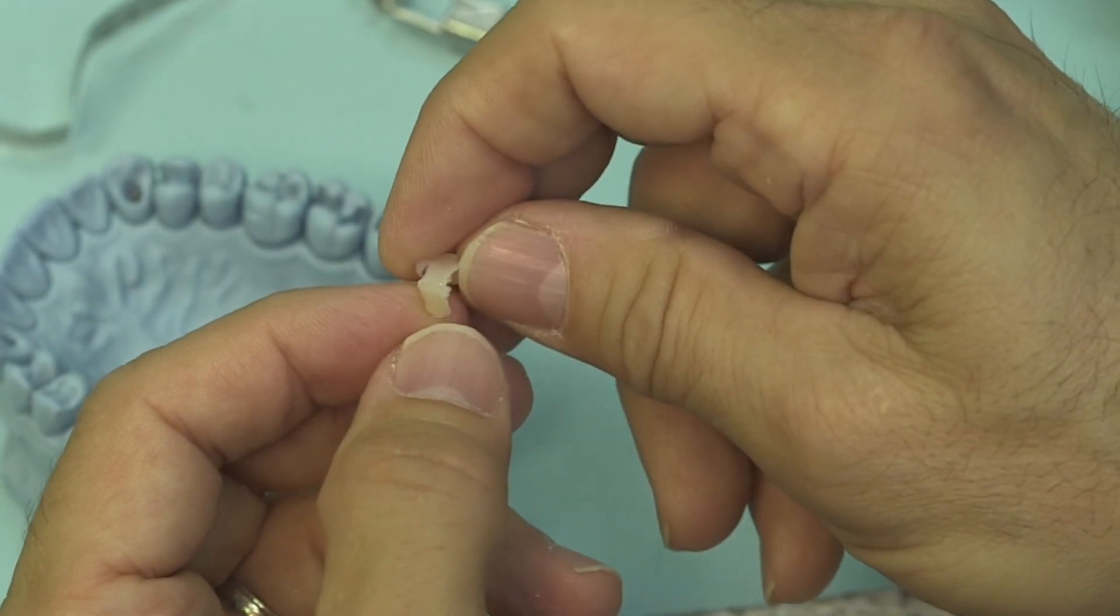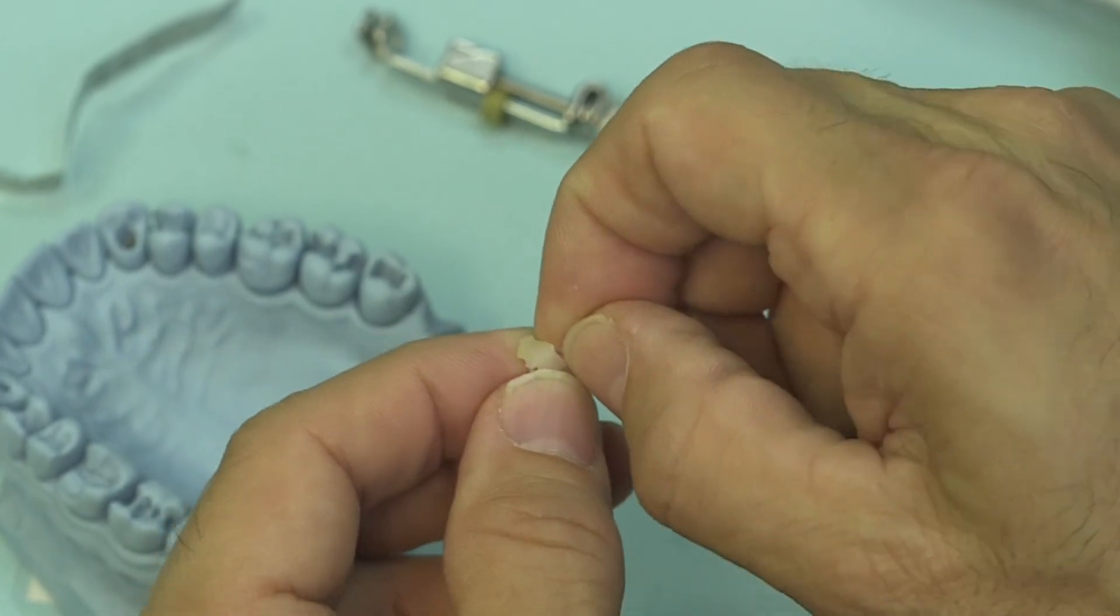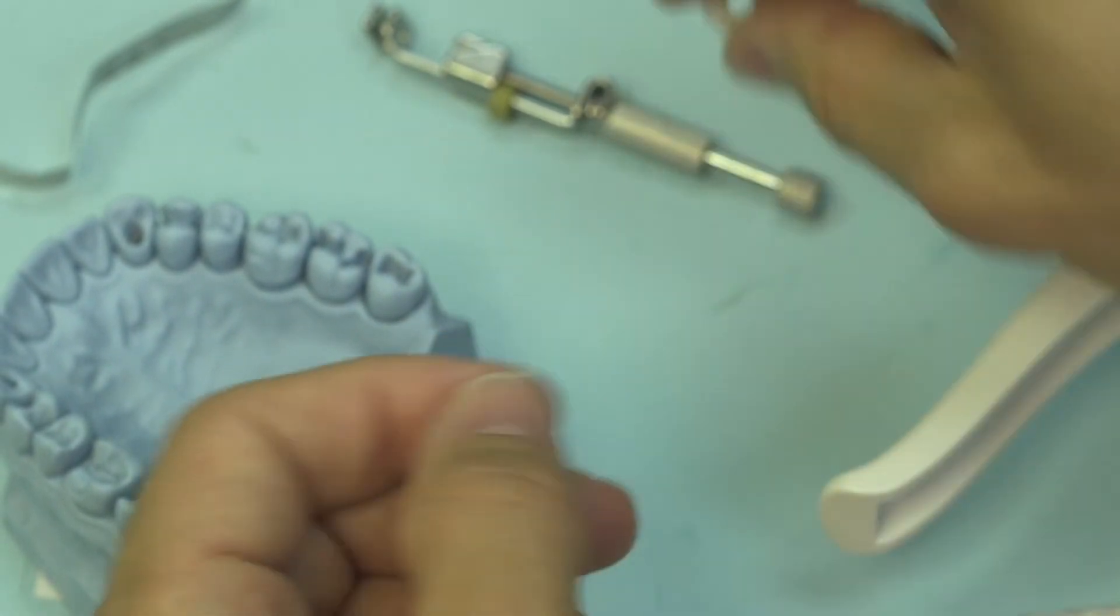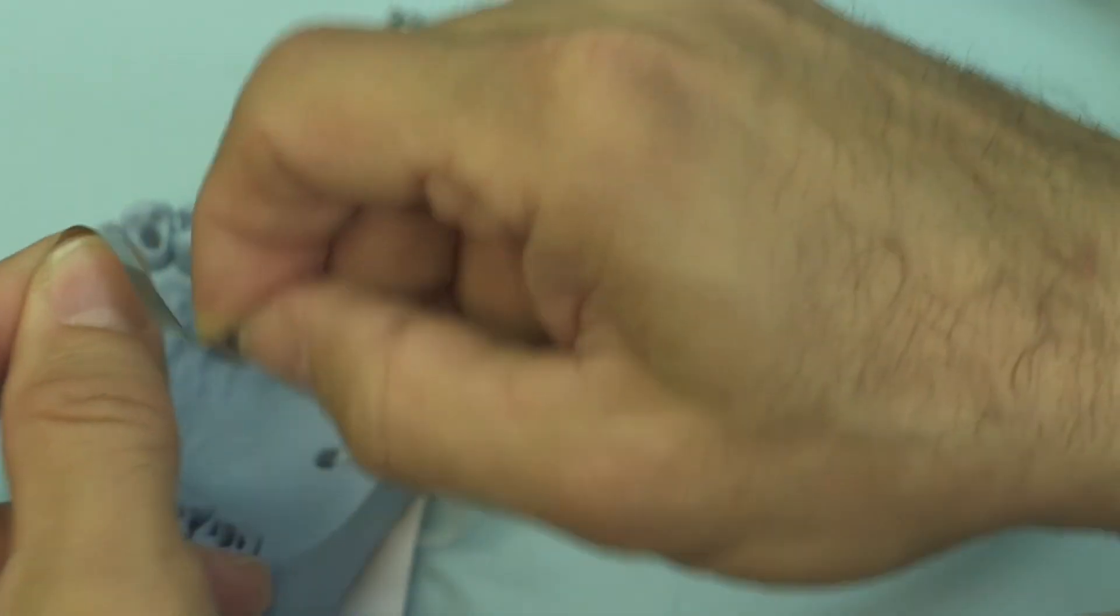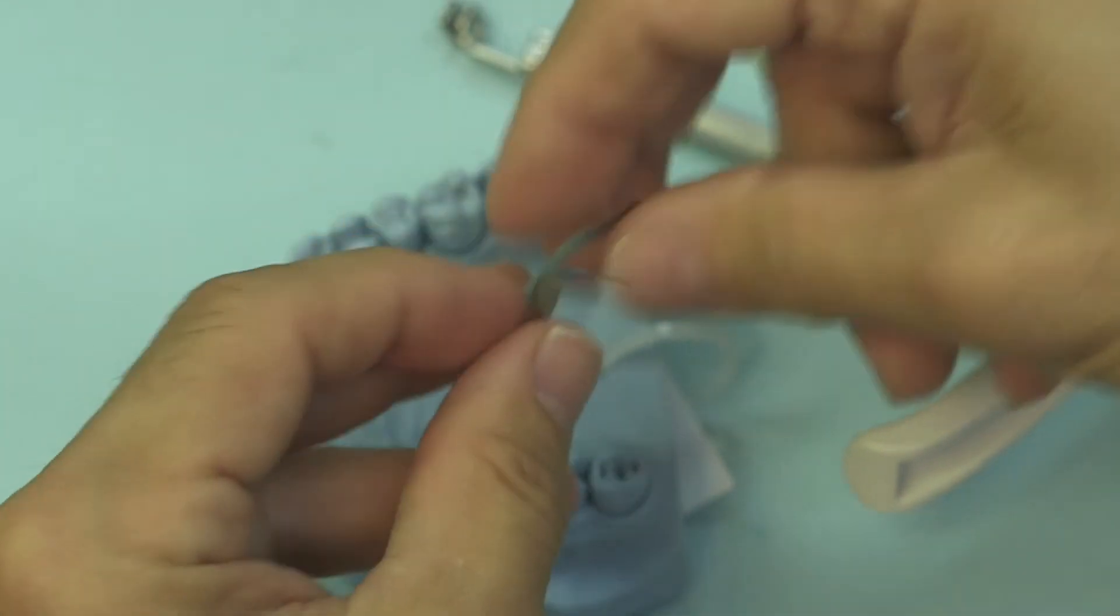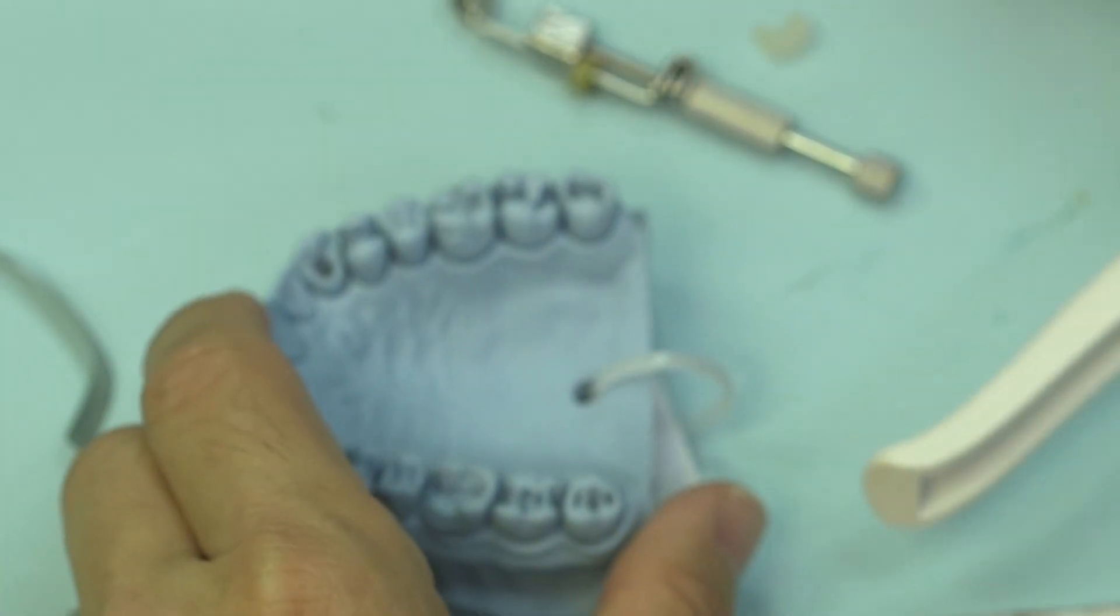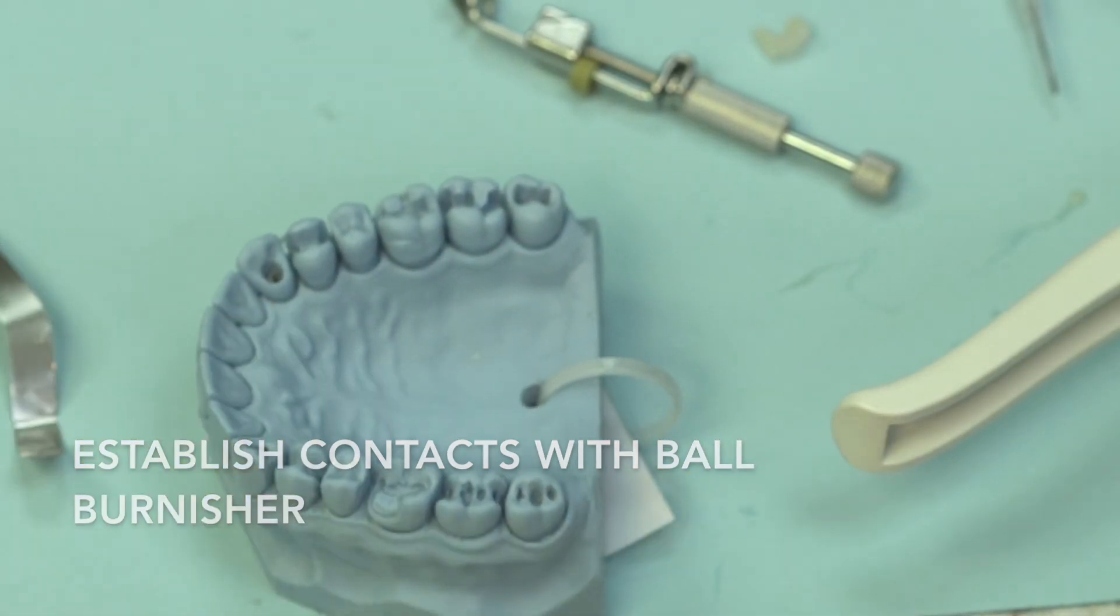Now people ask all the time, John, this is an injectable material that's fairly viscous, but how do you get good contacts? Well again, contacts are going to be created by how you manipulate your band. If you do not wedge and put your band on properly and create contacts with your band and a good ball burnisher, you're never going to get good contacts.